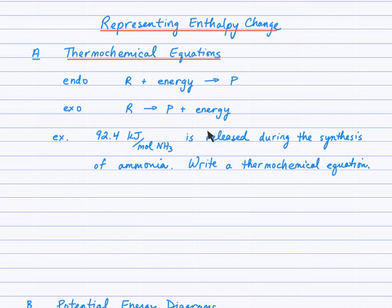A thermochemical equation is a balanced equation that includes an energy term. Here's an example: the molar enthalpy for the synthesis of ammonia is provided. 92.4 kilojoules per mole of ammonia is released during the synthesis of ammonia. Write a thermochemical equation.